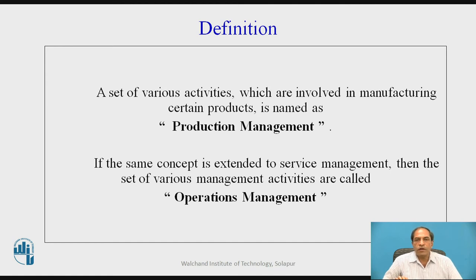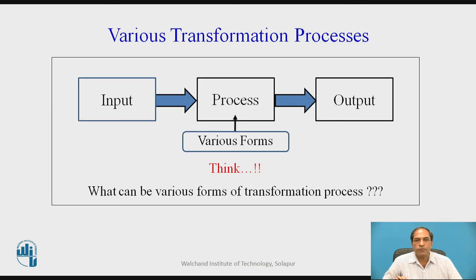A set of various activities involved in manufacturing certain products is named as production management. If the same concept is extended to the service sector, the various management activities are called operations management instead of production management. In pictorial form, the transformation process has an input and an output, with various processes converting input into output. These conversion processes are either production processes or service processes.